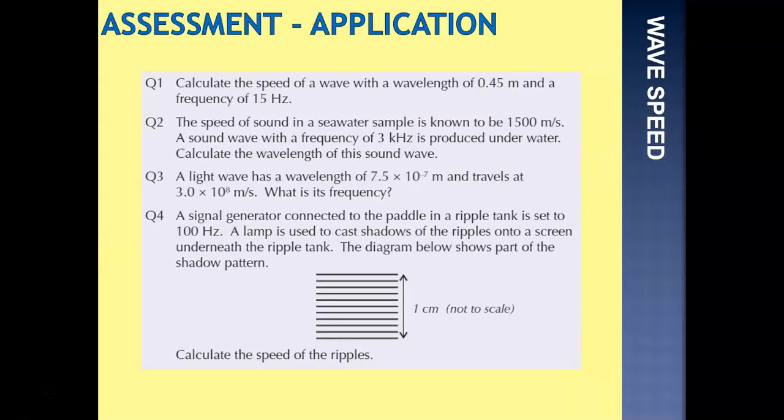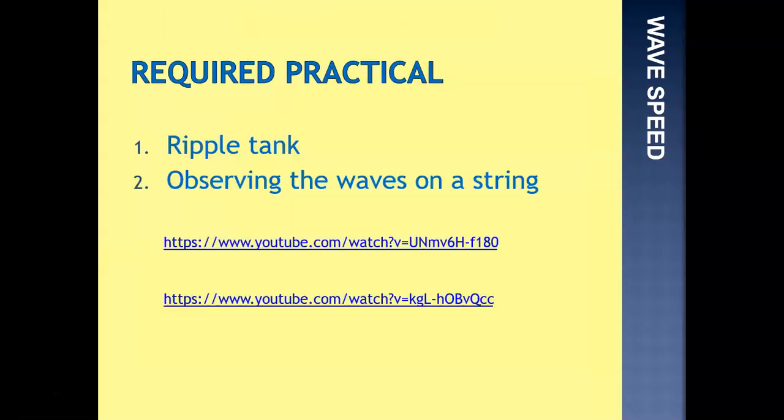And finally, the question four, a signal generator connected to the paddle in a ripple tank is set to 100 hertz. A lamp is used to cast shadows of the ripples onto a screen underneath the ripple tank, and the diagram shows part of the shadow pattern. That's 1 centimetre that's been shown there, not to scale. Calculate the speed of the ripples. So from the diagram, we should be able to work out the wavelength. We have 1, 2, 3, 4, 5, 6, 7, 8, 9, 10, 11 waves in 1 centimetre.